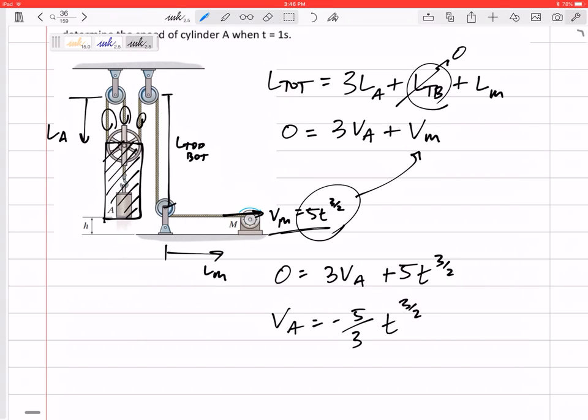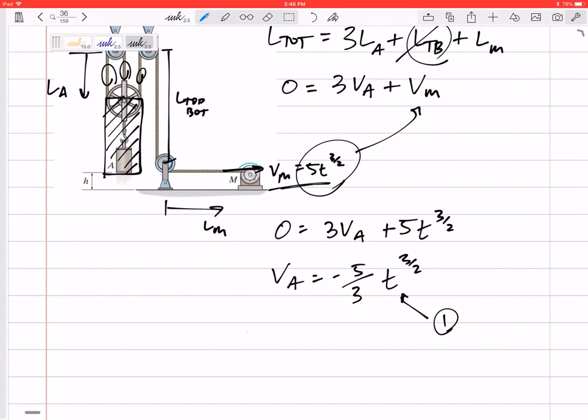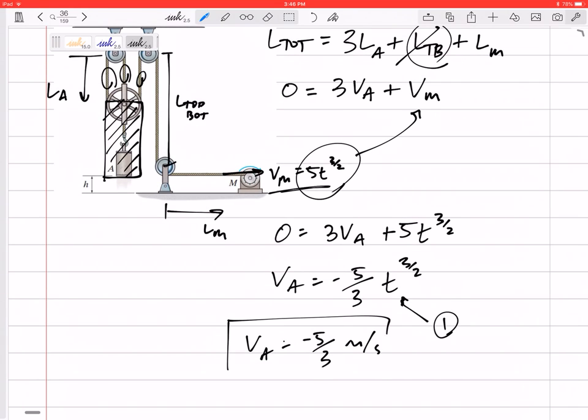So there's an equation for the velocity of A, and so this could get complicated - I could start taking derivatives and integrals depending on what I'm looking for - but this one just simply asks what is the velocity when t equals 1. So I plug in 1 right there, and I've got velocity of A equals negative 5/3 meters per second.